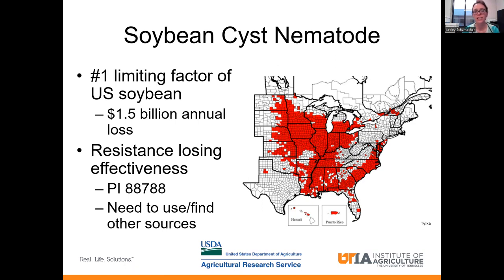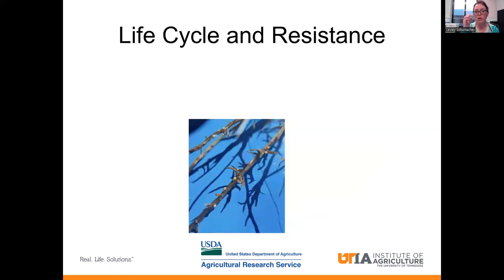The real problem that we're having is that resistance is losing its effectiveness, and this is specifically regarding a very common source of resistance known as PI-88788. This is planted on about 95% of infested acreage, and we really need to be finding new sources of resistance and using other sources of resistance in order to manage this nematode.